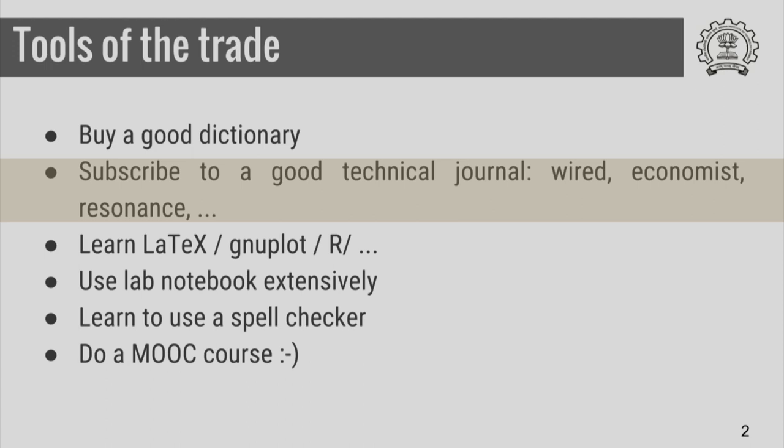It is also a good idea to subscribe to a good technical journal. There are several — Wired, Economist, Resonance, and so on. Resonance is a journal of science education published by the Indian Academy of Sciences and it is available for free online. You can once in a while check out the articles; they are meant for school and college students, and lots of scientific information is explained in a manner that students from schools and colleges can understand.